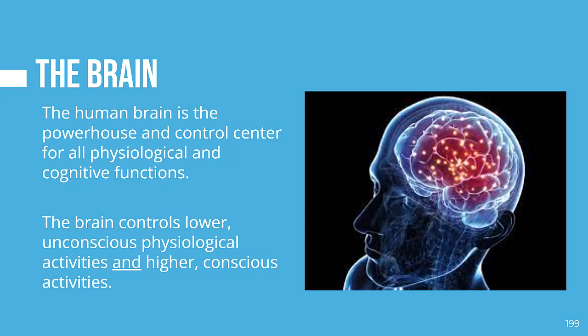We will begin by looking at the brain in detail. The most powerful computer known is the brain — it's a three-pound miracle. The human brain possesses about 100 billion neurons with roughly one quadrillion — meaning one million billion — connections known as synapses, wiring these cells together. It controls all physiological and cognitive functions, including lower unconscious activities like keeping your heart going, breathing, and digestion, as well as higher conscious activities like thinking and purposeful movement.